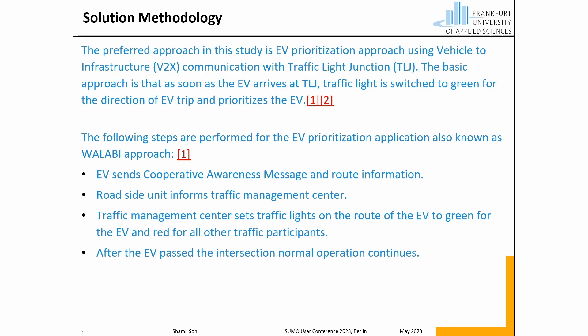Since the traffic model is simulated, the next step is to simulate different scenarios to optimize the arrival time of emergency vehicles. The approach used here is vehicle-to-infrastructure communication, where the basic approach is: as soon as the emergency vehicle arrives at the traffic light junction, the traffic light is switched to green in the direction of the EV and prioritizes the EV. The next question is: what is the optimal distance at which this traffic light should be changed to green?